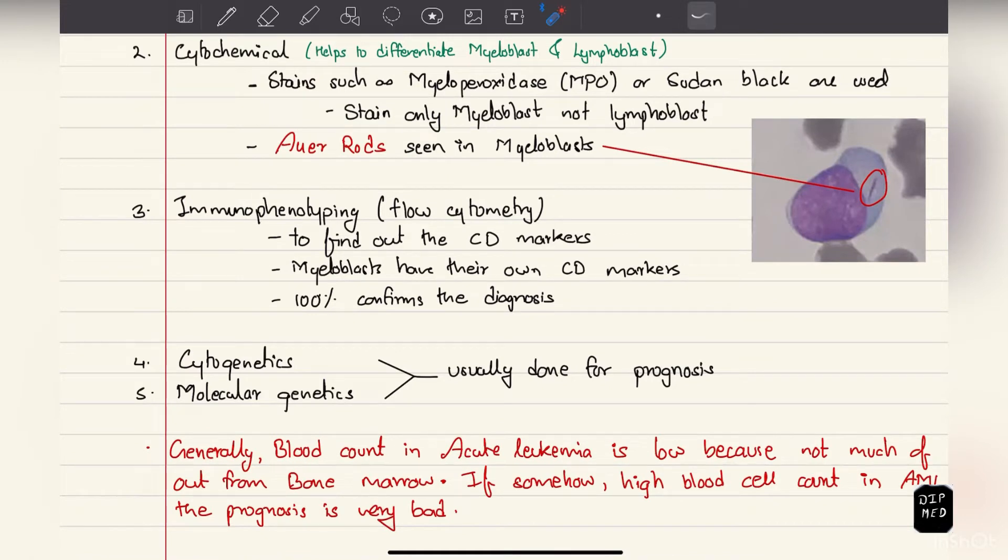On immunophenotyping or flow cytometry, we look for different CD markers. Each of these cells have their own CD markers. We have to find them to confirm the diagnosis. Cytogenetics and molecular genetics tell more of the prognosis.